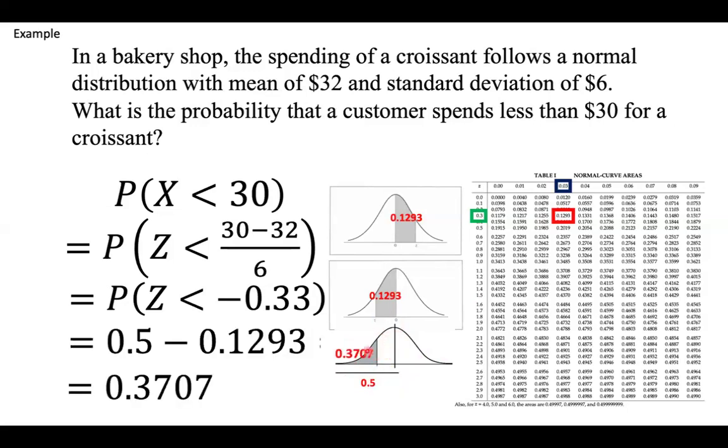In order to get the little area towards the tail, then we subtract. 0.5 take away 0.1293. And there we have it, 0.3707.